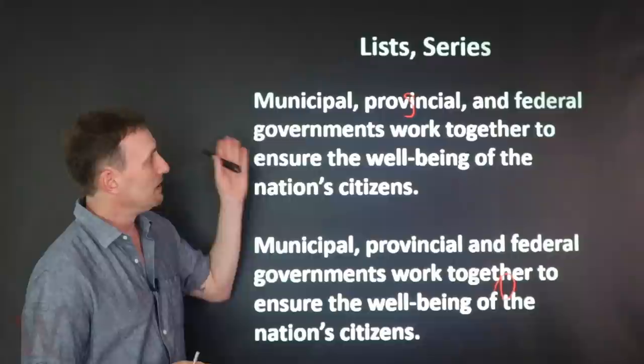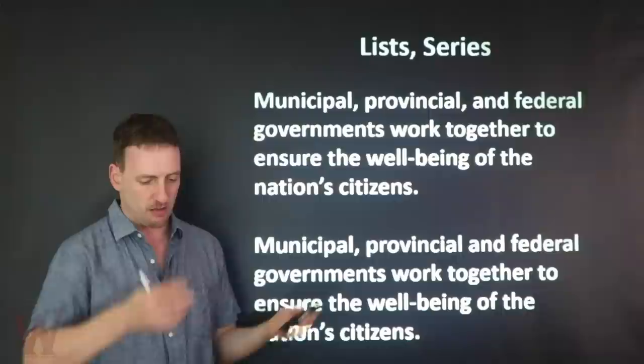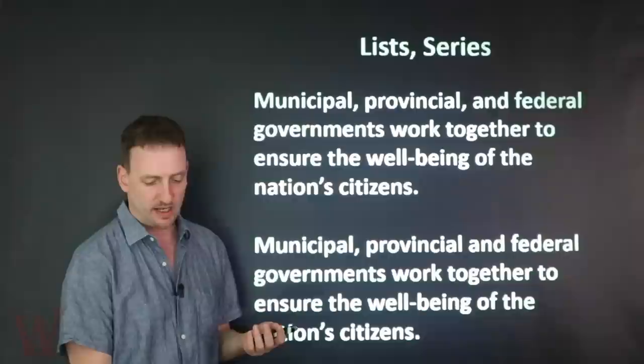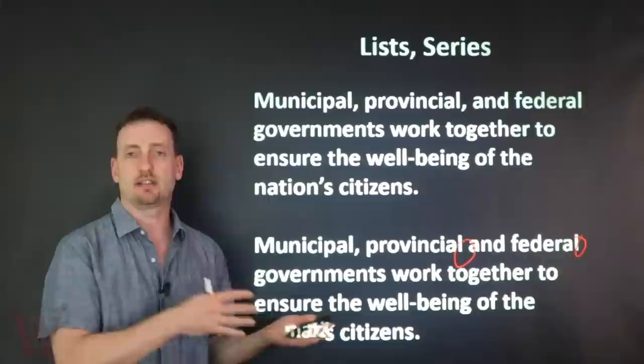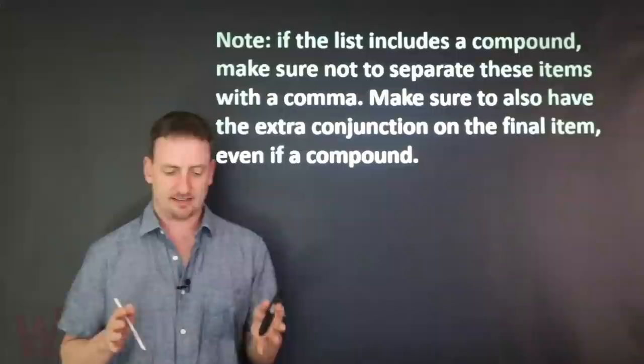Let's look at another example: 'Municipal, provincial, and federal governments work together.' Here the subject is a compound at the beginning. With or without the serial comma before 'and federal' — both are fine. The list can appear at the beginning, middle, or end of the sentence; it doesn't matter. The rules don't change. So far, so good — easy stuff.